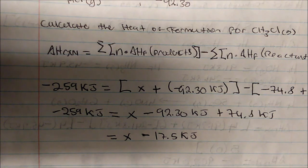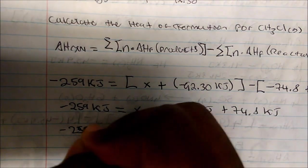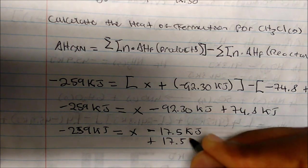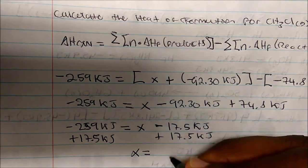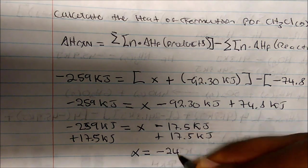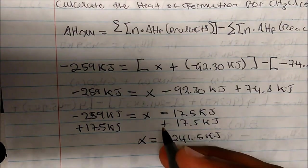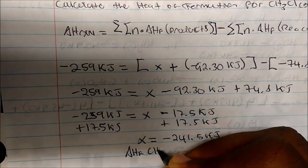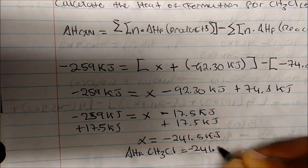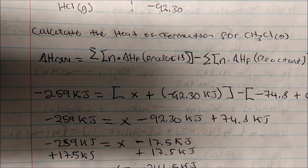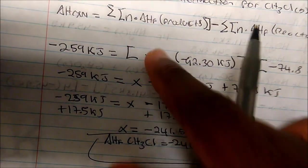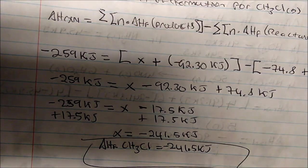Taking negative 92.30 plus 74.8, we get negative 17.5. That equals negative 59 kilojoules. Simply adding 17.5 on both sides, X equals approximately negative 241.5 kilojoules. We can now replace X with the heat of formation of CH₃Cl, which is negative 241.5 kilojoules. This is how we solve for anything involving the heat of formation of specific reactants or products — you could also use the heat of formation variable directly instead of X, but using X keeps the calculation simpler.